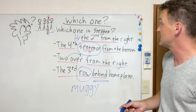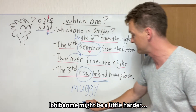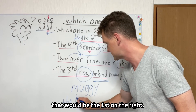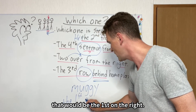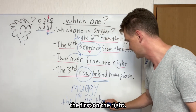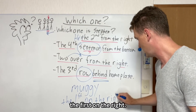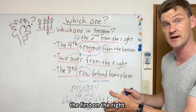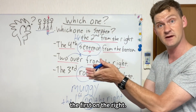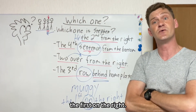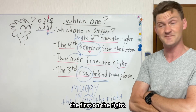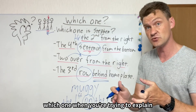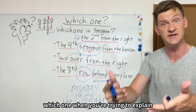But if you had 1番目, that might be a little harder. That would be 'the first on the right.' We use 'on' instead of 'from' here. So he's the first on the right. I hope this helps you identify 'which one' when you're trying to explain.